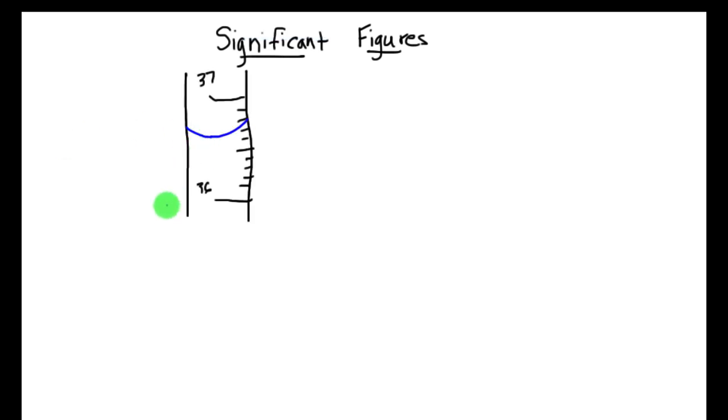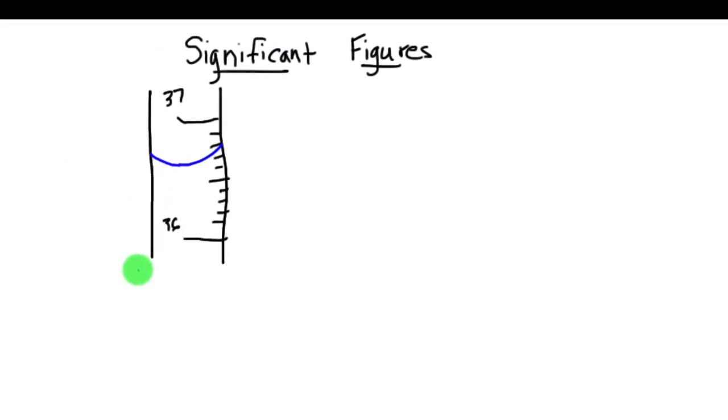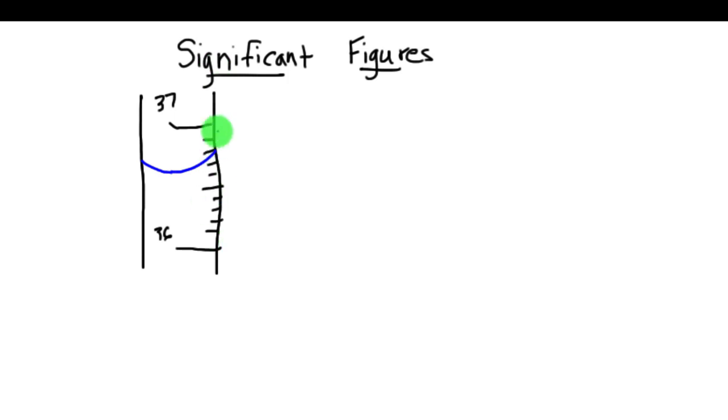The best way I can describe this is if we look at a measurement. Let's say we have here a graduated cylinder with the measurement markings on it, and let's say that this is done in milliliters. So we got 37 milliliters on this graduated cylinder.